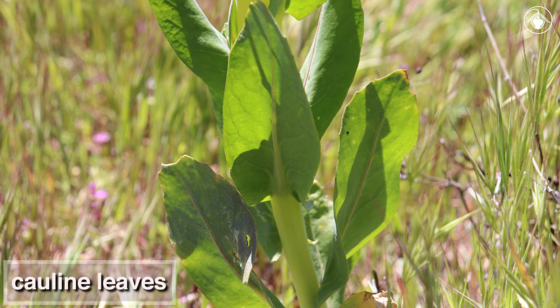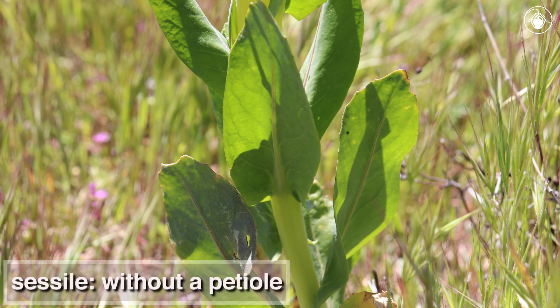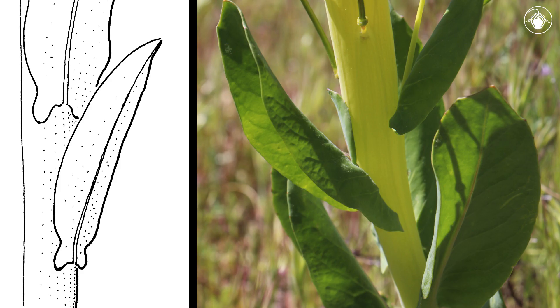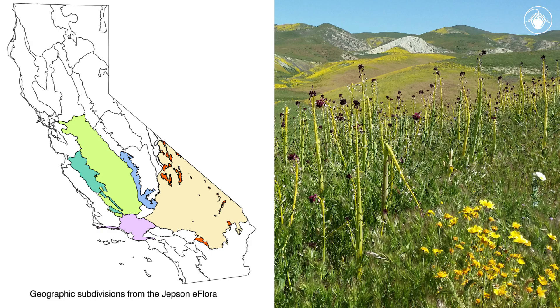The cauline leaves, which are the leaves that occur along the stem, are sessile, meaning they do not have a petiole. The leaf base is lobed, sagittate, or clasping. Desert Candle is found in Southern California on open, sandy plains to rocky slopes and dry hillsides.